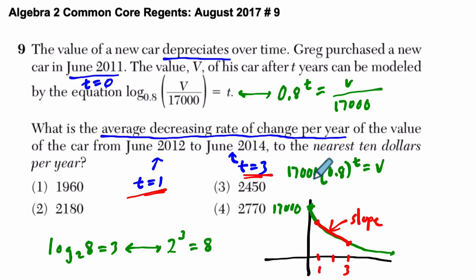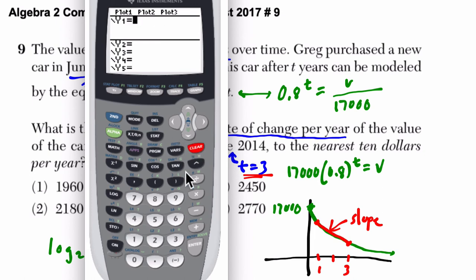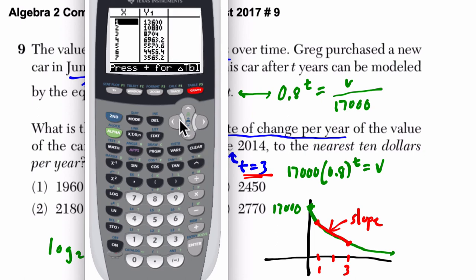What I like to do is use my calculator, just a little bit faster, at least for me. So I clear up any old data, I type in 17,000 times 0.8 to the power of X. And then I just go to my table. This gives me the inputs and output. So after one year, the car is worth 13,600. And after three years, it's worth 8,704.